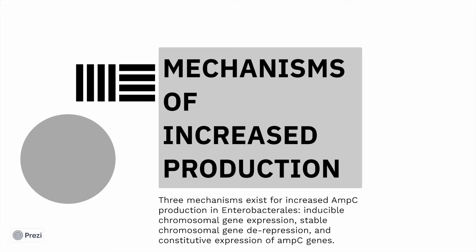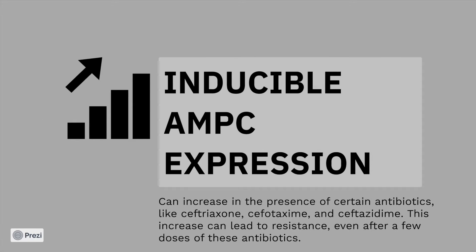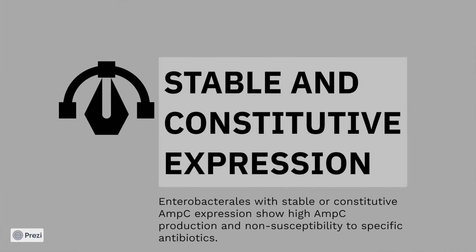There are three mechanisms which exist for increased AMP-C production in Enterobacteriaceae. The first is inducible AMP-C expression — there can be an increase of AMP-C production in the presence of certain antibiotics like ceftriaxone, cefotaxime, and ceftazidime. This increase can lead to resistance even after just a few doses of the antibiotic. The next is stable and constitutive expression: some Enterobacteriaceae have a constitutive gene of AMP-C which increases in production, making them non-susceptible to specific antibiotics.